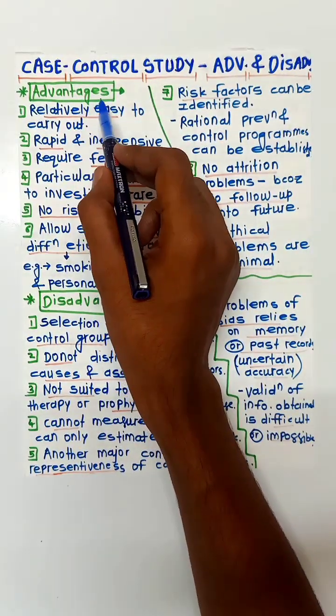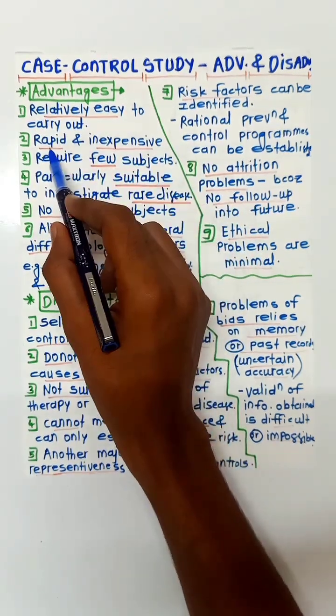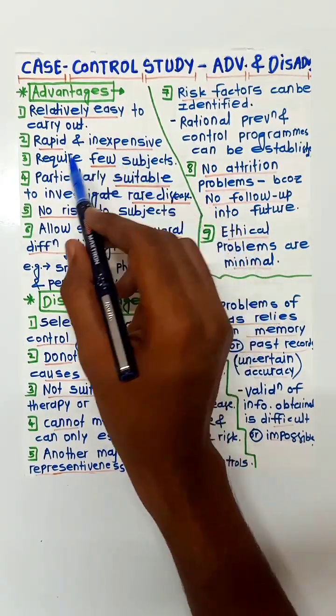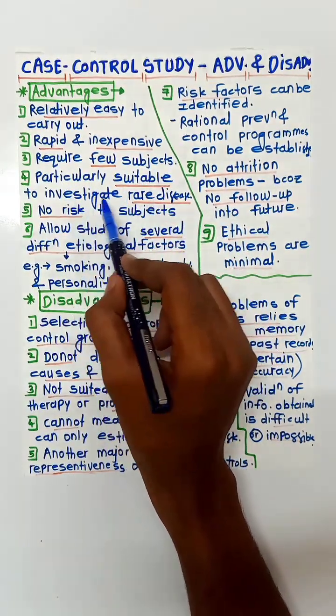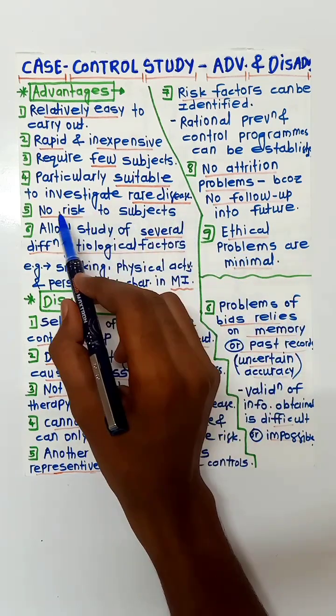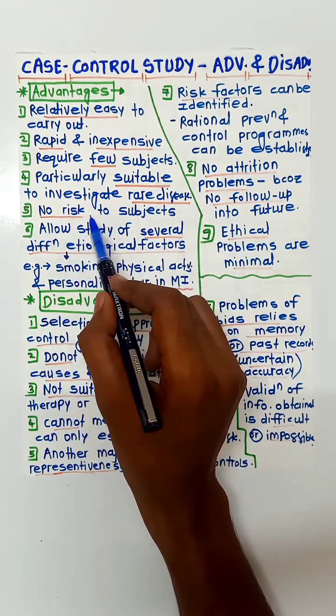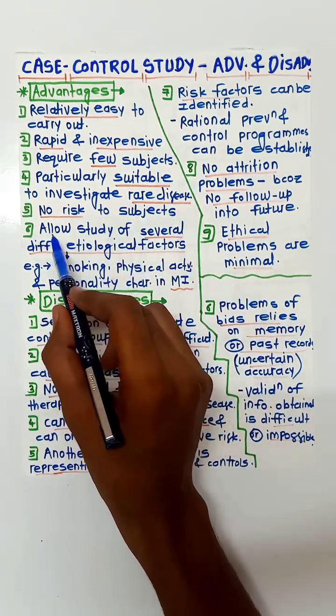First of all, advantages: it is relatively easy to carry out, it is rapid and inexpensive, it requires few subjects, it is particularly suitable to investigate rare diseases, and there is no risk to subjects involved.